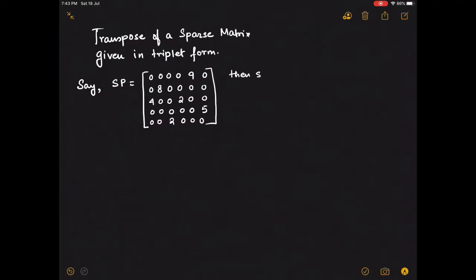If we find the transpose of this matrix SP, let us call it SP dash, we need to simply interchange the rows and column numbers of the individual entries. So for example, the first row in the matrix SP was four zeros followed by nine then a zero. Note that the matrix SP dash has the first column as four zero nine then zero.